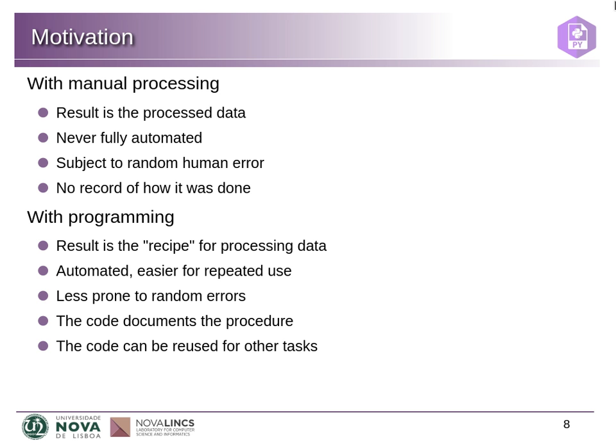Manual processing makes things subject to errors that are not reproducible — you can make one mistake once but then a different mistake the second time, making it harder to monitor those mistakes. You also don't necessarily have a record of how the data was processed. Unless you are very careful about recording everything — how you used the spreadsheet, how you wrote the formulas — usually there will be no record of how it was done. If you have some experience in the lab, it's often the case that a PhD student or postdoc did some work, they went away, and now nobody knows how those data got there. So this is a problem with manual processing.